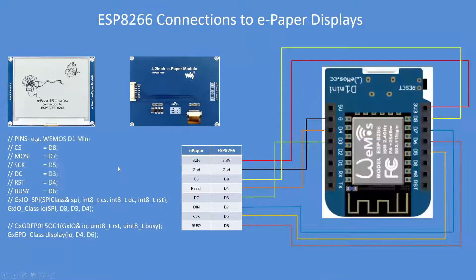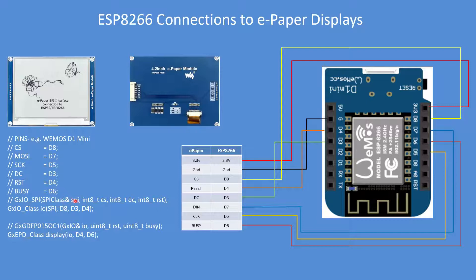That's how you connect the ESP32. For the ESP8266 it's the same process: define your data pins, remove the comments if required, and replicate those pins in the two class objects and make your connections accordingly.